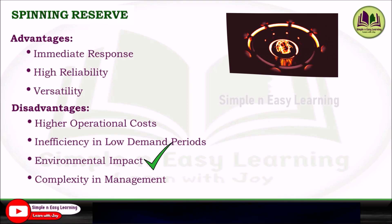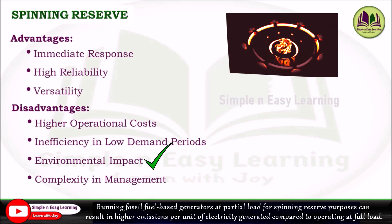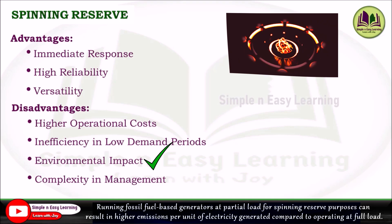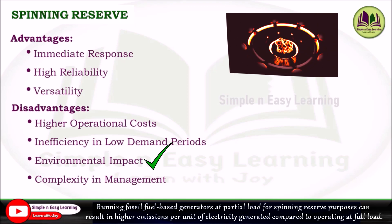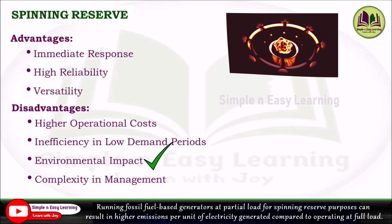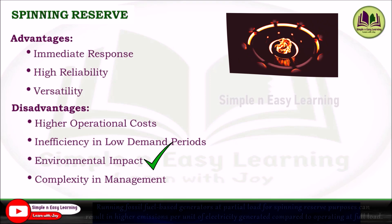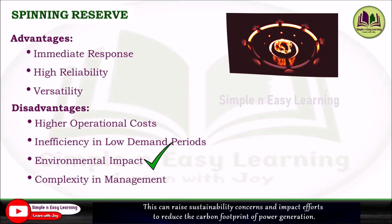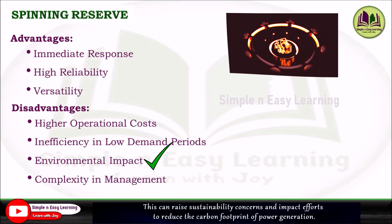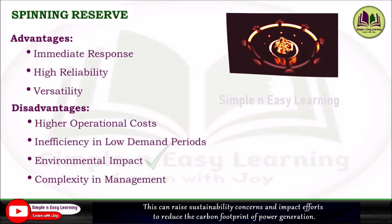The third disadvantage is environmental impact. Running fossil fuel-based generators at partial load for spinning reserve purposes can result in higher emissions per unit of electricity generated compared to operating at full load. This raises sustainability concerns and impacts efforts to reduce the carbon footprint of power generation.